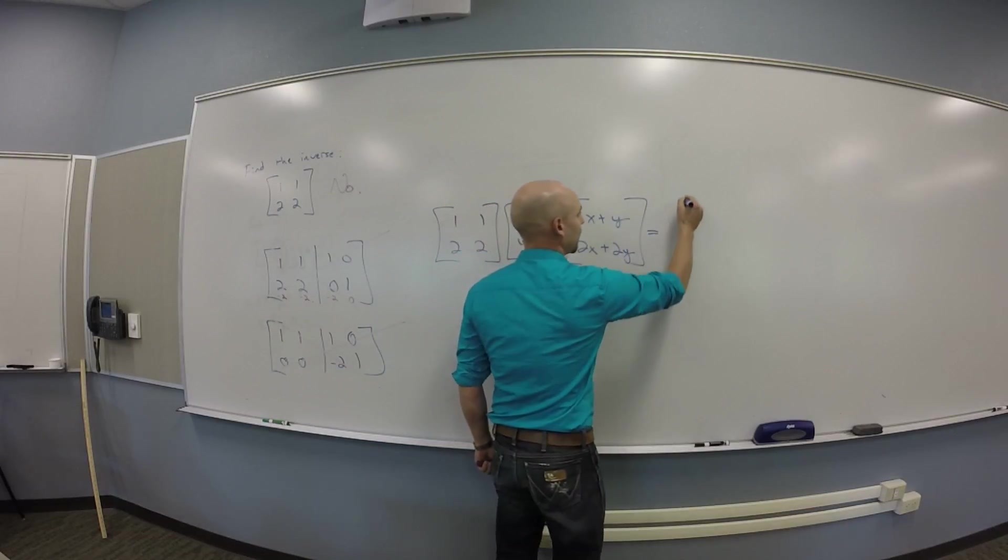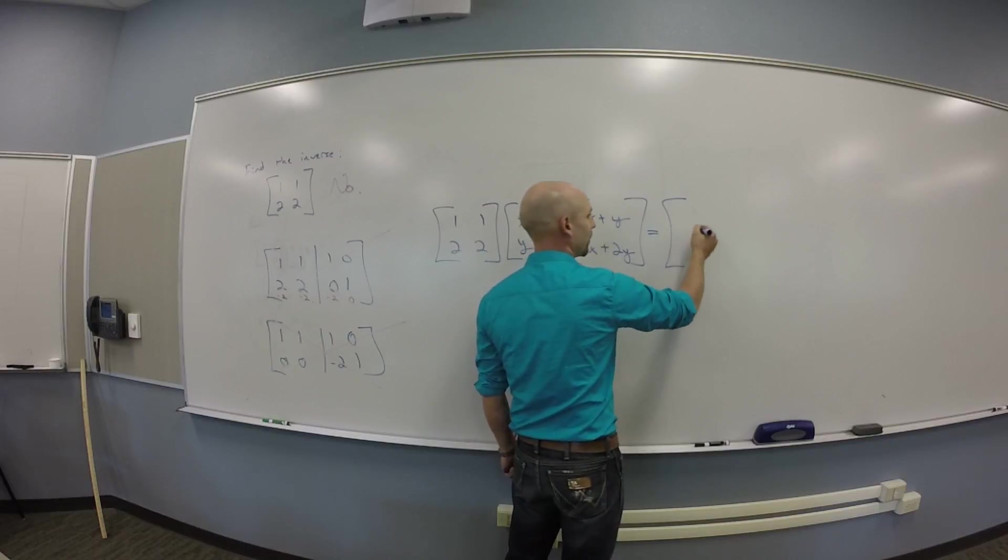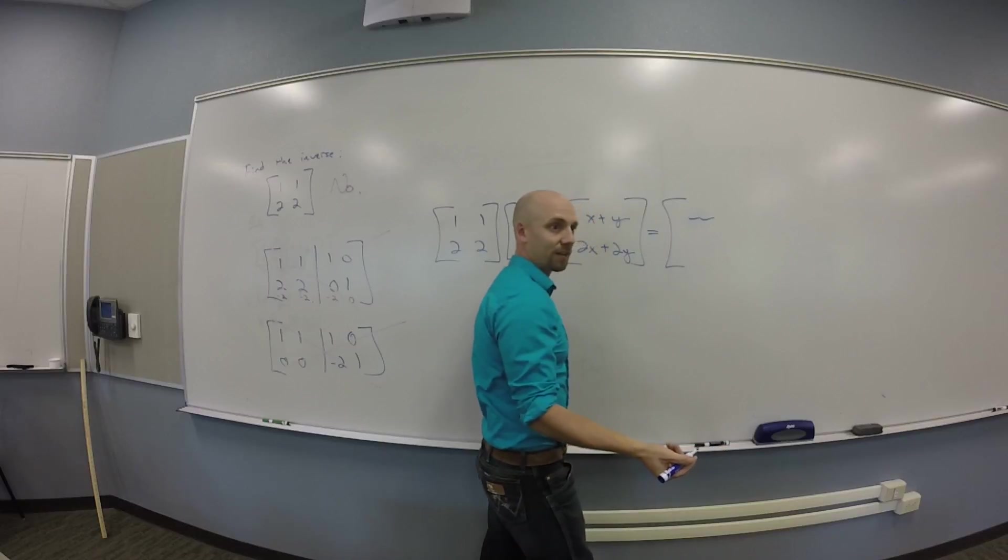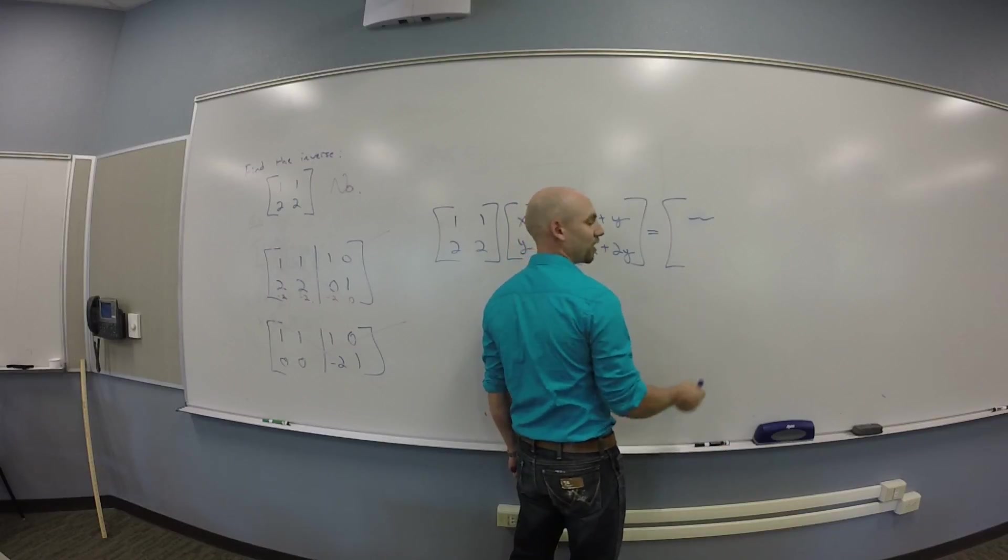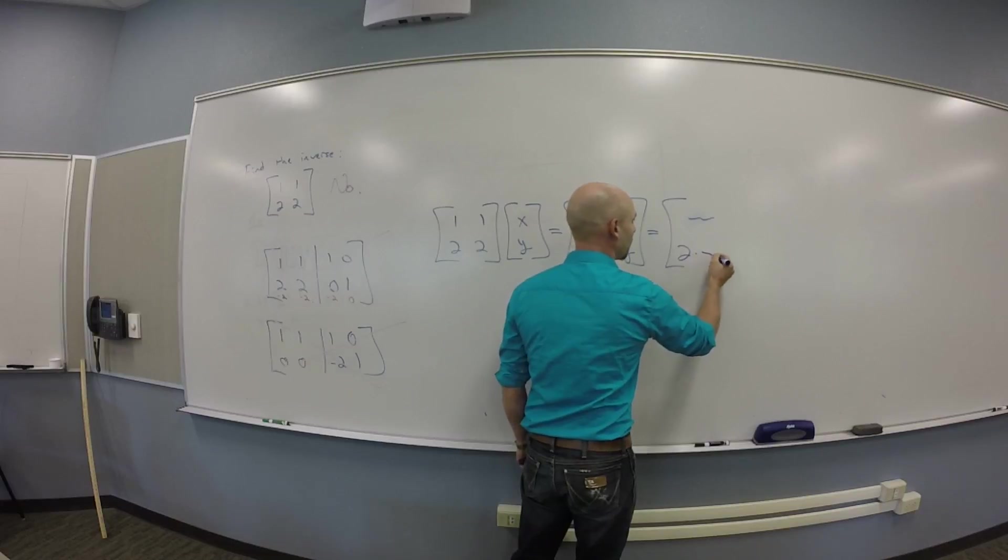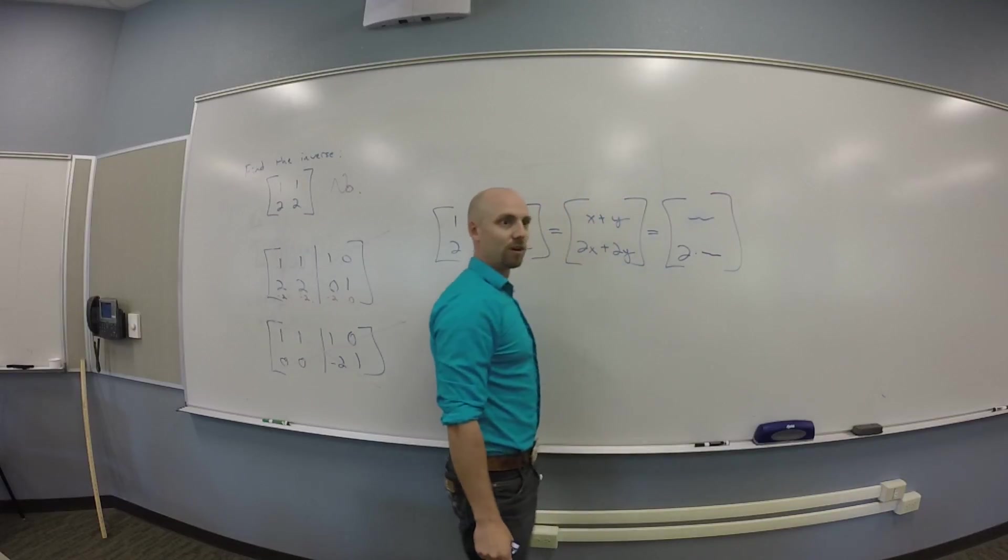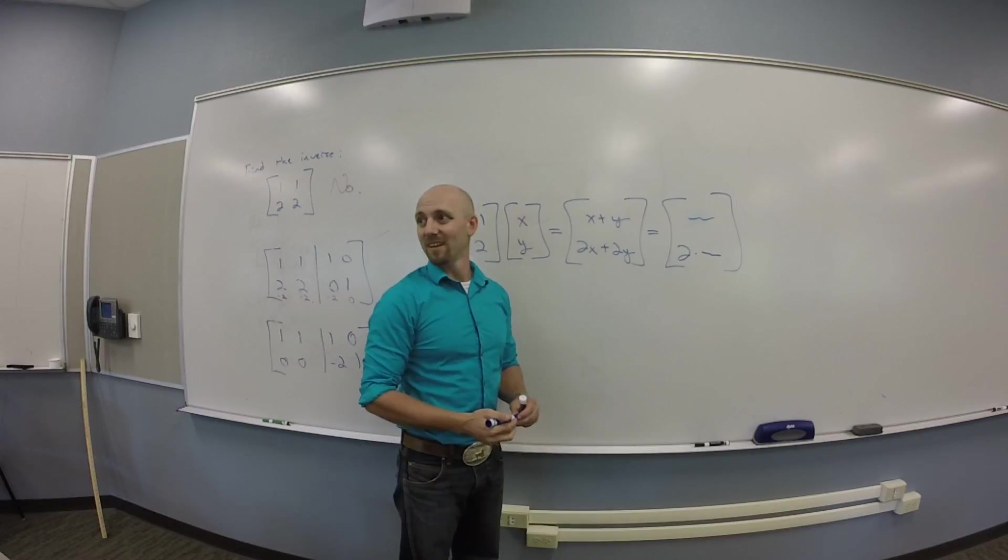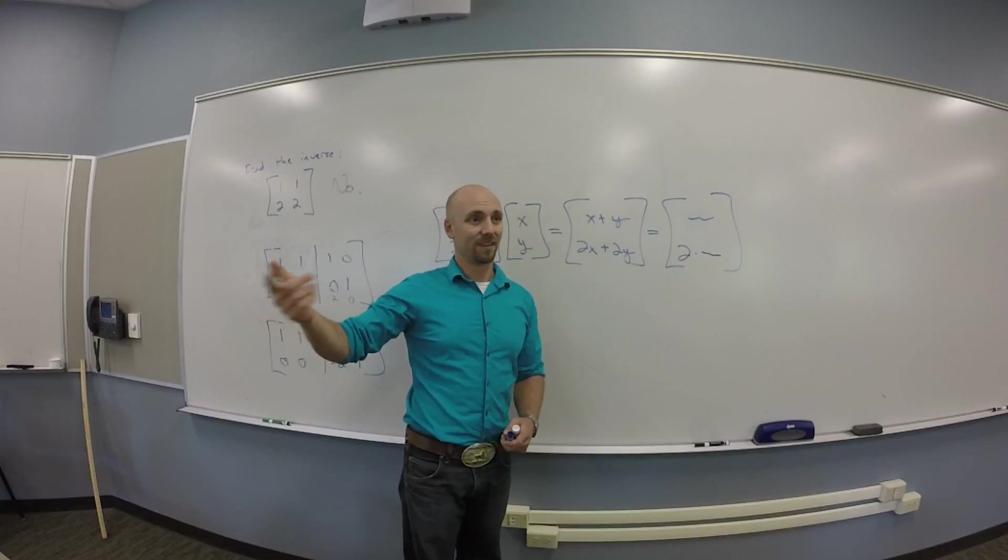Okay. Notice that this is a vector that looks like some stuff, right, and then the second coordinate is 2 times stuff. So. So what? You can't really do very much with it.